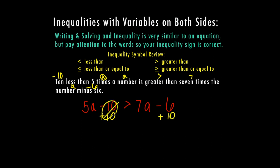This negative 10 and positive 10 make zero, so I'm left with 5A is greater than 7A plus 4 — because 10 minus 6 equals 4. Now I want to move this 7A to the left side. The opposite of 7A is negative 7A, so I subtract that from both sides. This leaves zero on the right and 4 on the left, giving me 4 is less than 5A minus 7A, which is negative 2A.